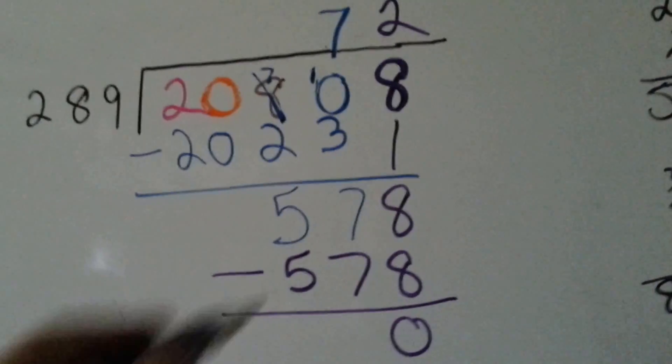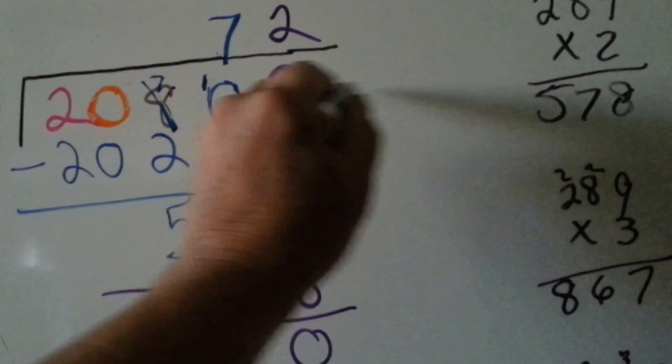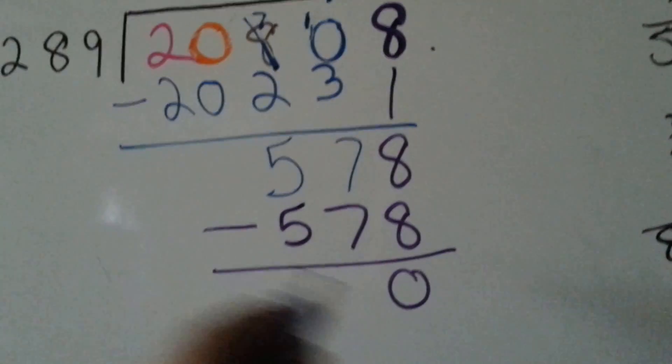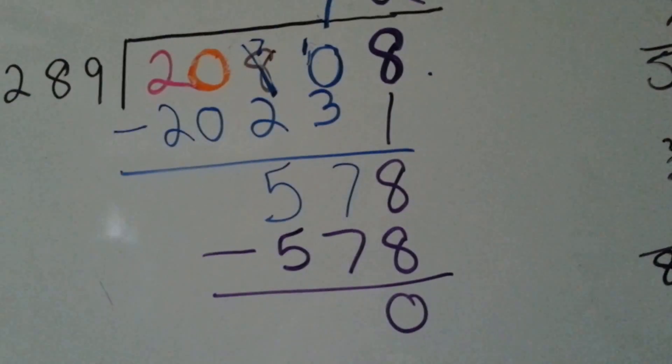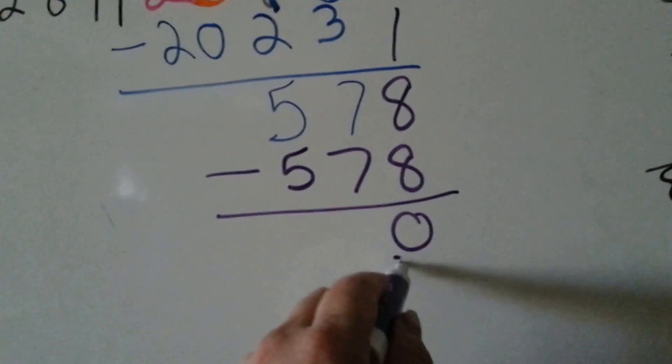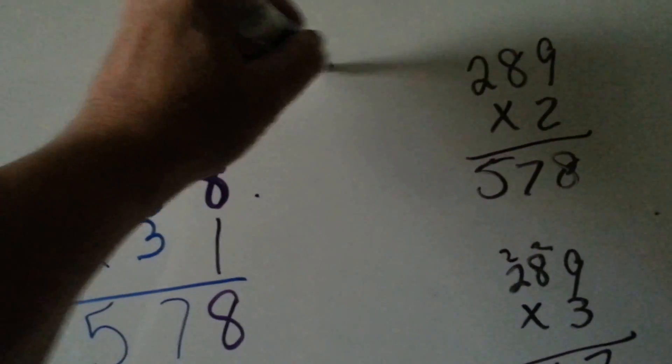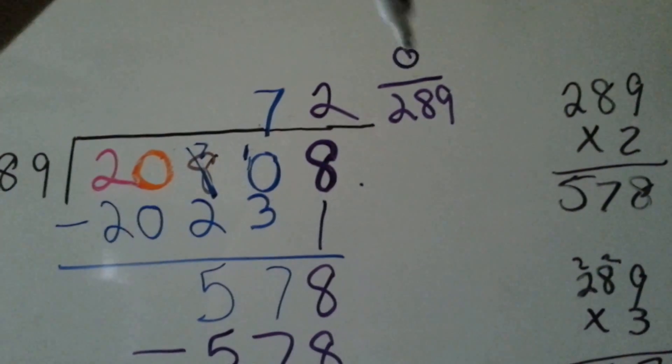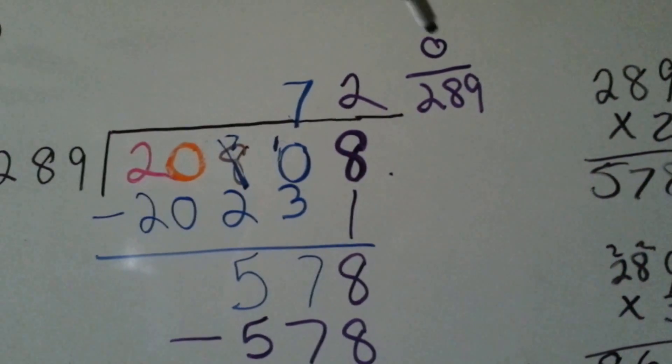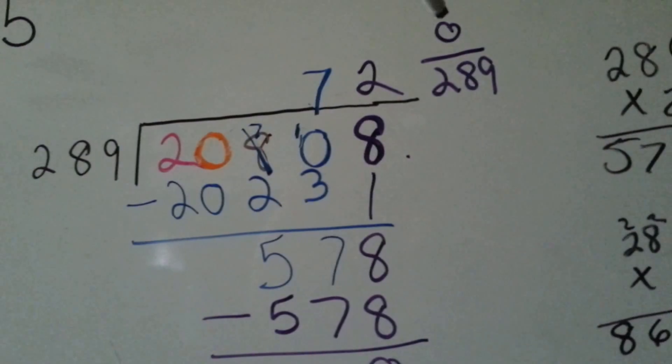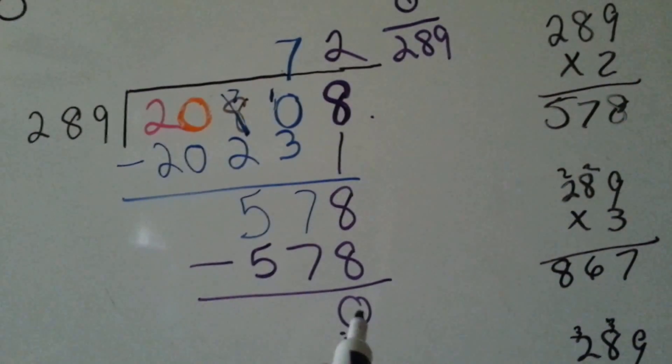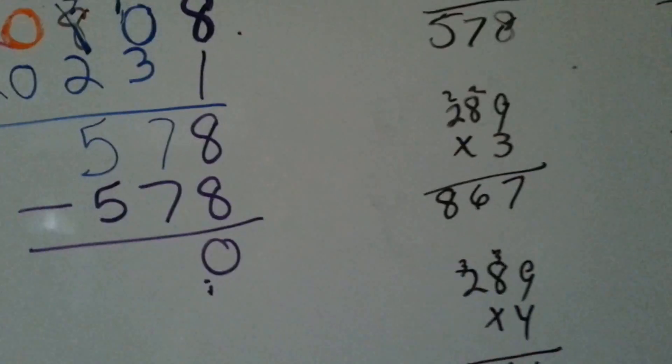Now what happens if there was more numbers coming on here and our remainder was like a 1 or a 2 or something like that? Did you know that whatever the remainder is can be written as a fraction? Now that's a silly one right now because you can't have 0 as a numerator.